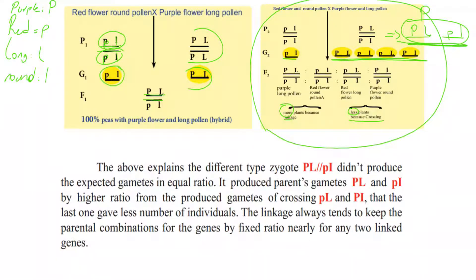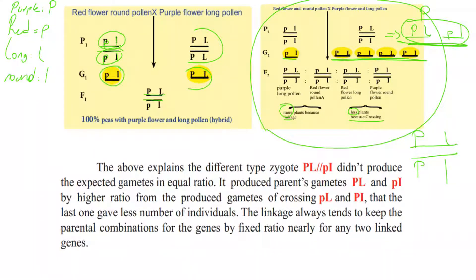The different types of zygotes: capital P capital L with small p small l — these lines mean the two genes are located on the same chromosome. Capital P capital L with small p small l did not produce the expected gametes in equal ratio. It produced parental gametes — PL and pl — in a higher ratio than the gametes produced by crossing over — small p capital L, and capital P small l — which gave fewer individuals. Linkage always tends to keep the parental combinations of genes, by a fixed ratio for any two linked genes. The aim of crossing over is genetic diversity, but the number of organisms affected by crossing over is less, while normal organisms are more.